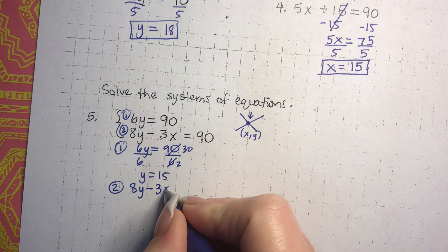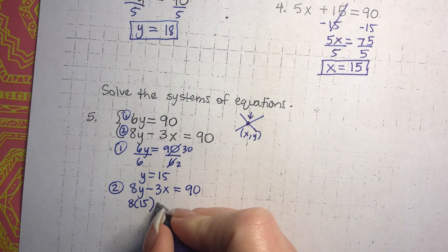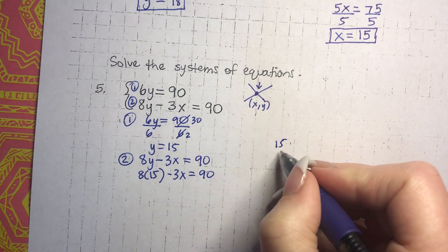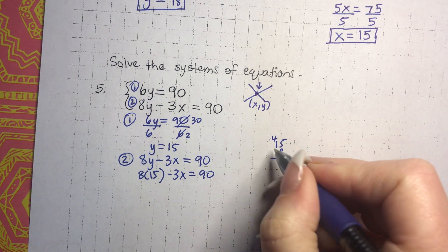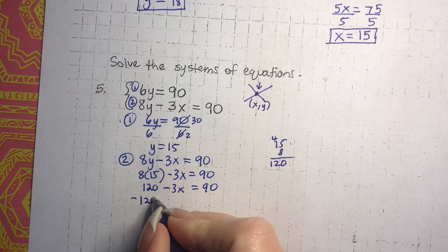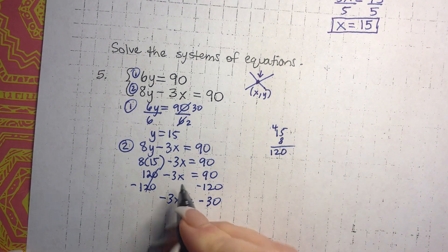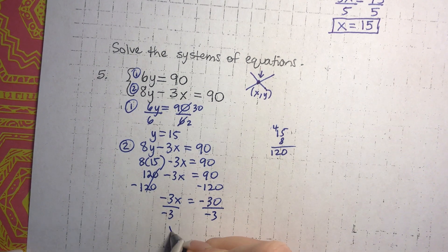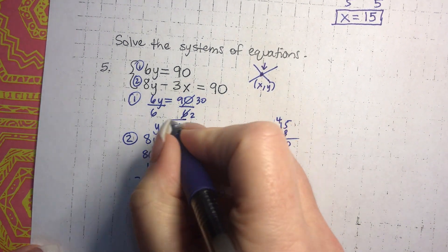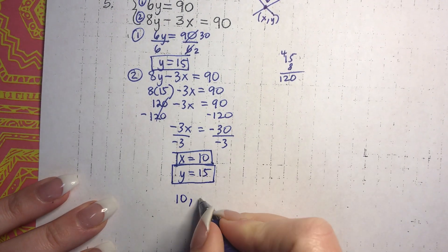Now I'm going to substitute into equation 2. I rewrite equation 2 and substitute y equals 15 in. 8 times 15 — 8 times 5 is 40, 8 times 10 is 80, so that's 120. So 120 minus 3x equals 90. I need to get rid of the 120 — that cancels and leaves negative 30. Divide both sides by negative 3, and a negative divided by a negative is positive, so x equals 10. Our answer is x equals 10, y equals 15, or as an ordered pair, (10, 15).